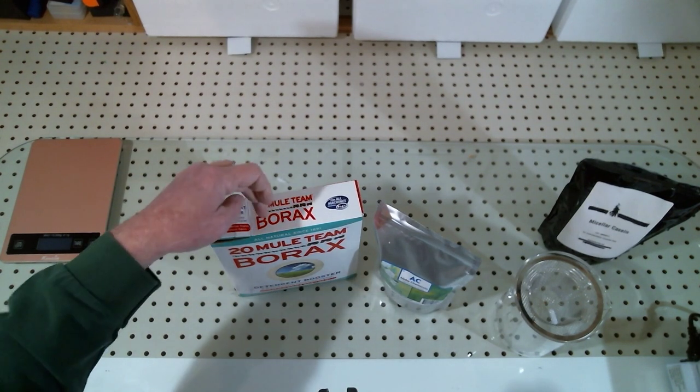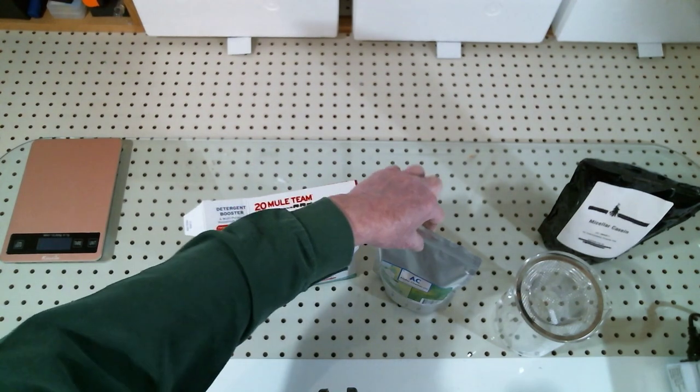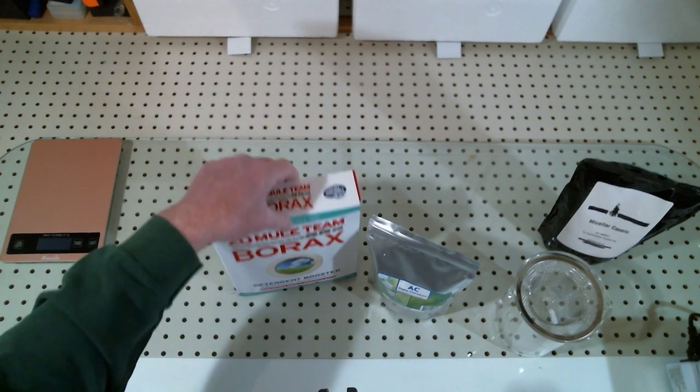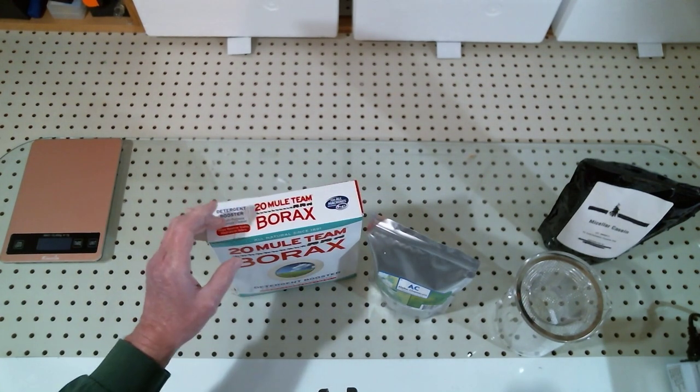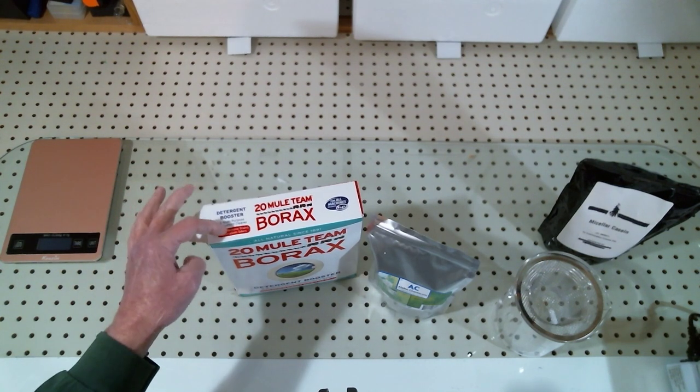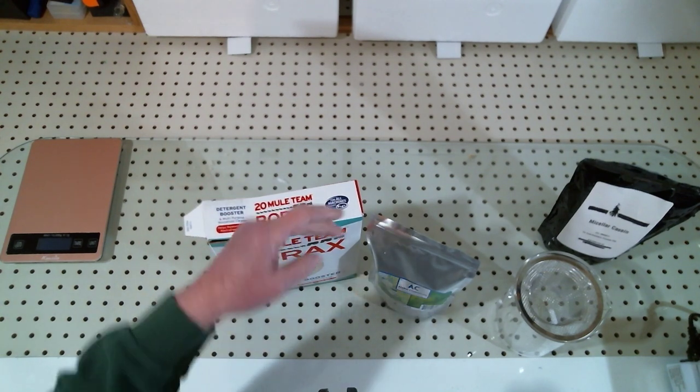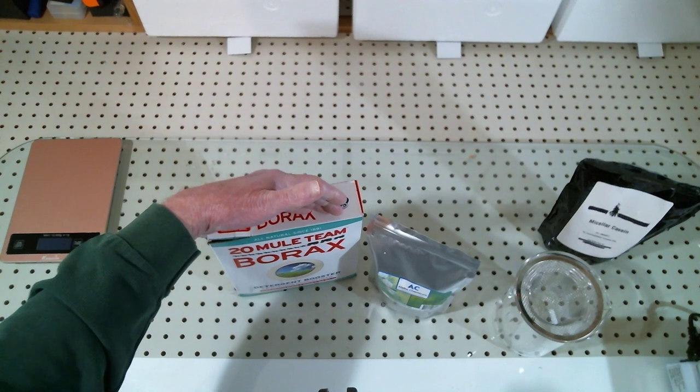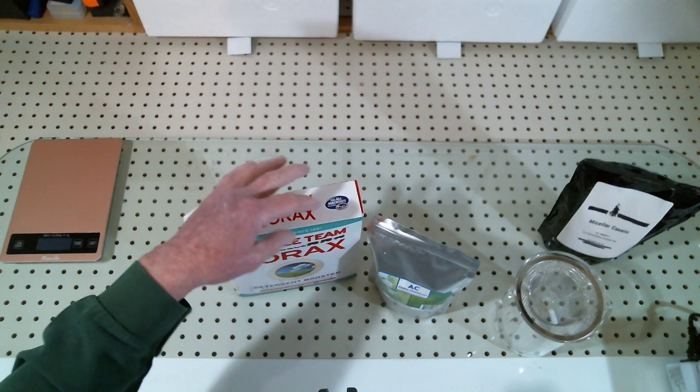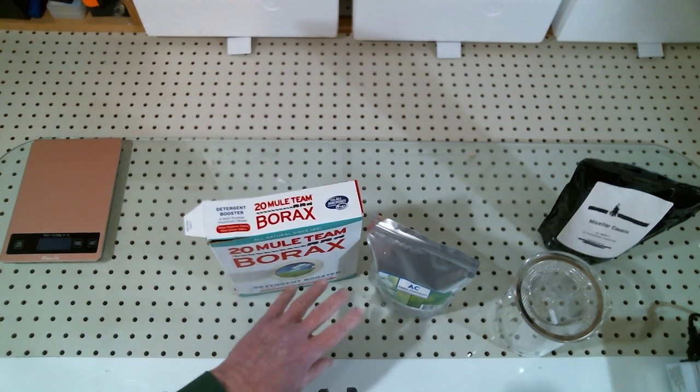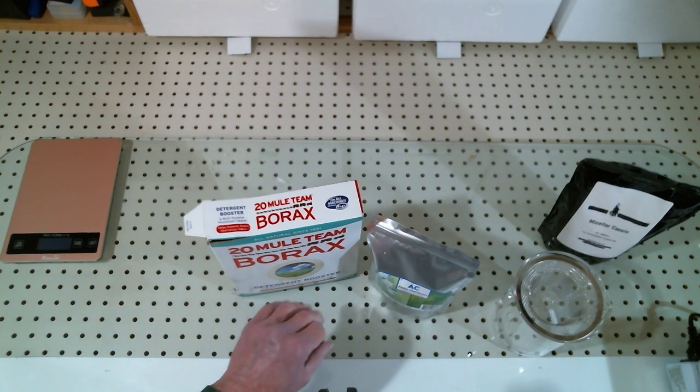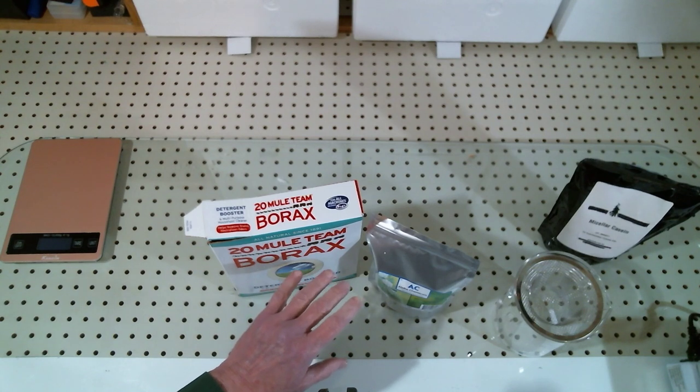As I was setting up for this segment of the video it occurred to me that these two components, borax and urea, are regularly used in the wood industry as a fire retardant. I have experience in fire retardants working as a scientist in the candle industry, so I'm making a mental note to add a series of videos in the future teaching you more on fire retardants.